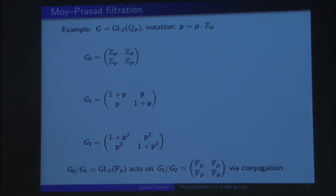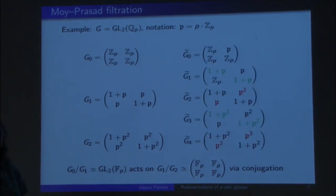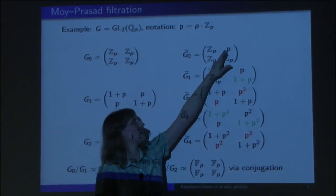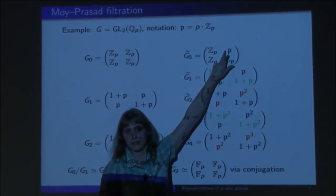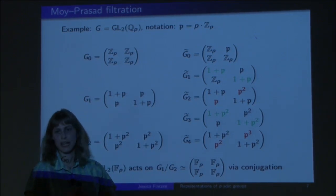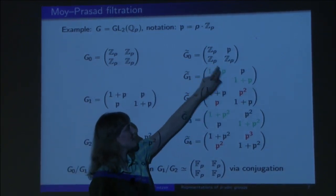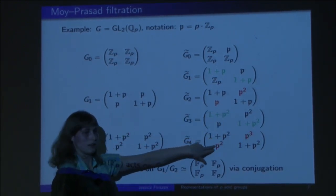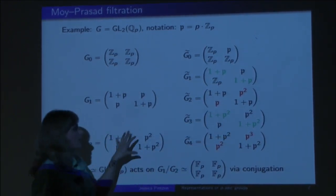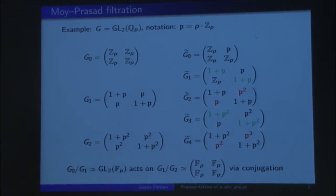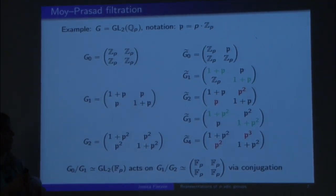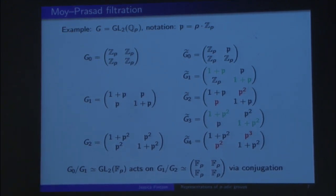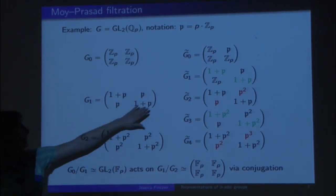This was an example of one filtration. Another filtration: instead of starting with matrices with Z_P everywhere, you start with a slightly smaller subgroup by putting a P in one entry. Then you go down in two steps — first on the diagonal, then on the off-diagonal terms, then again on the diagonal, then again on the off-diagonal. These are the two filtrations that appear, and roughly speaking I've shown you everything.